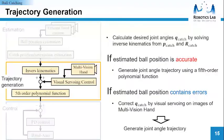In the trajectory generation, desired joint angles are calculated by solving the inverse kinematics. At this time, if the estimated ball position is accurate, generate the joint angle trajectory using a fifth-order polynomial function. In contrast, if the estimated ball position contains errors, correct the desired joint angle before generating the joint angle trajectory.